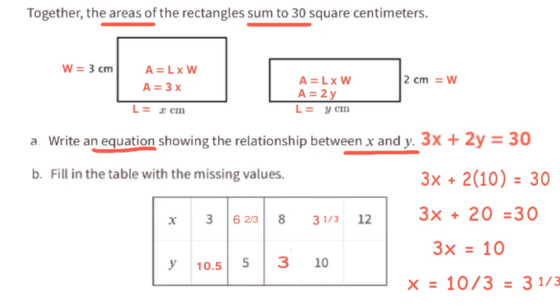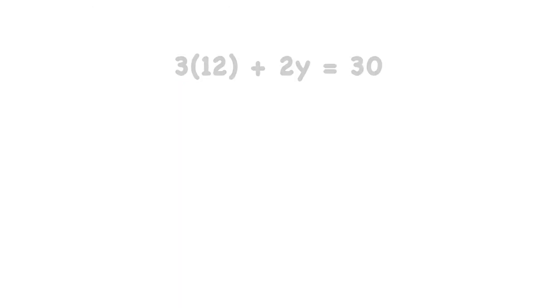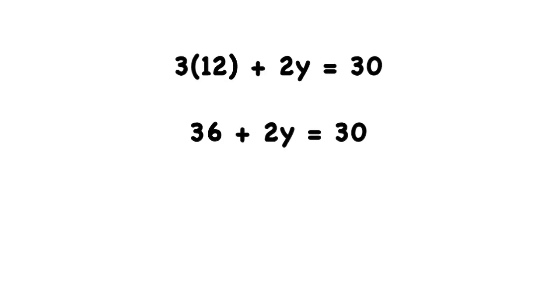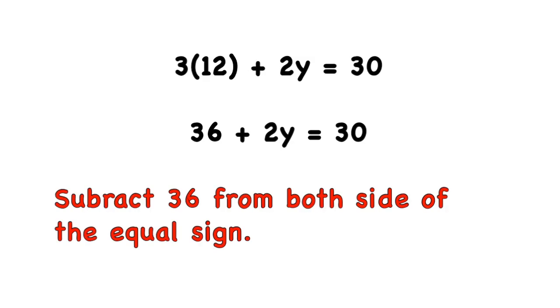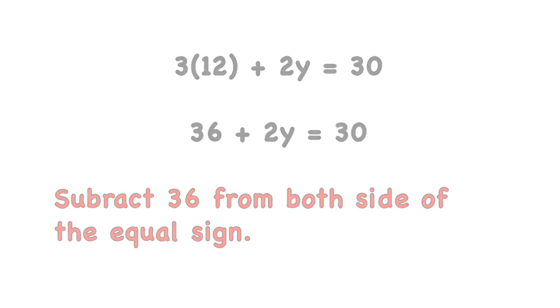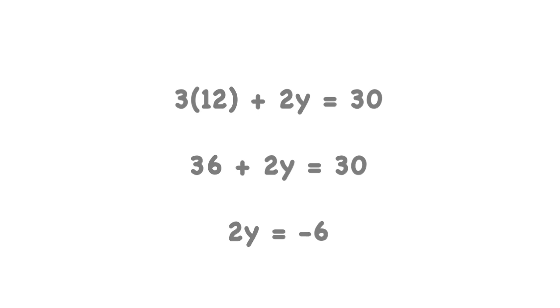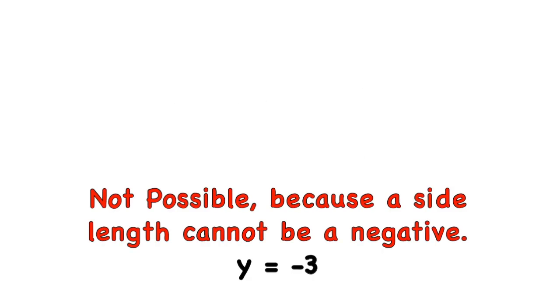Finally, when x equals 12, the equation becomes 3 times 12 plus 2y equals 30. Since 3 times 12 is 36, we have 36 plus 2y equals 30. Subtracting 36 from both sides gives 2y equals negative 6, so y equals negative 3. Remember, y equals a side length, so this is not possible because a side length cannot be negative. Shoutout to Froy and Lopez for helping with this last problem. Help me disrupt YouTube's algorithm by liking, commenting, sharing, and subscribing. Thanks, I appreciate it.